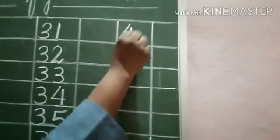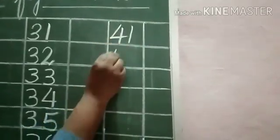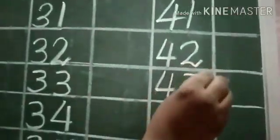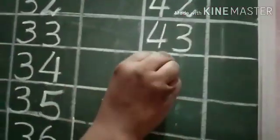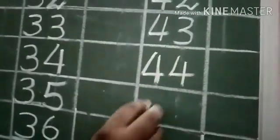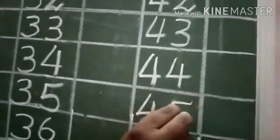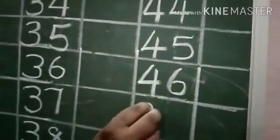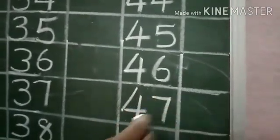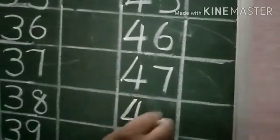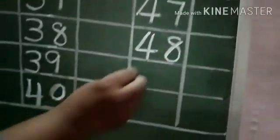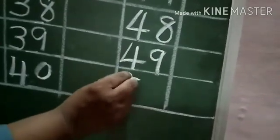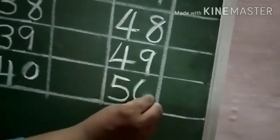Four, one, forty-one. Four, two, forty-two. Four, three, forty-three. Four, four, forty-four. Four, five, forty-five. Forty-six, forty-seven, forty-eight, forty-nine. Five, zero, fifty.